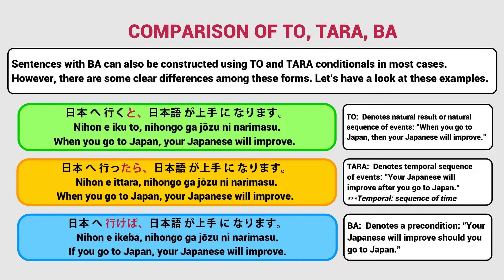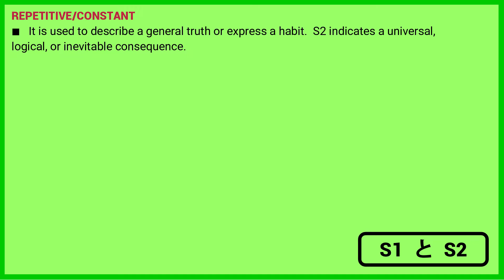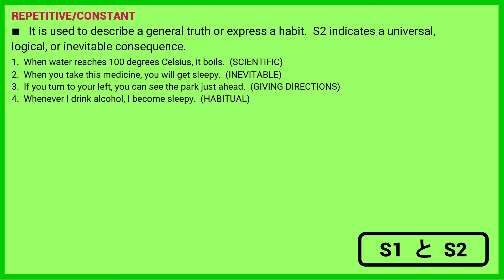While there are changes in nuances, there are many usages where they overlap and can be interchanged. The to conditional is repetitive or constant — used to describe a general truth or express a habit. The main clause indicates a universal, logical, or inevitable consequence. Examples: when water reaches 100 degrees Celsius, it boils; when you take this medicine, you will get sleepy; if you turn to your left, you can see the park just ahead; whenever I drink alcohol, I become sleepy.